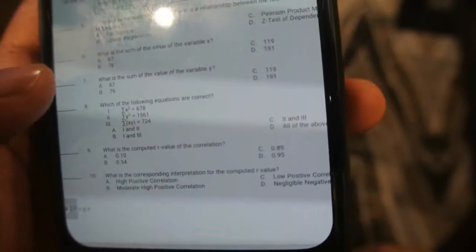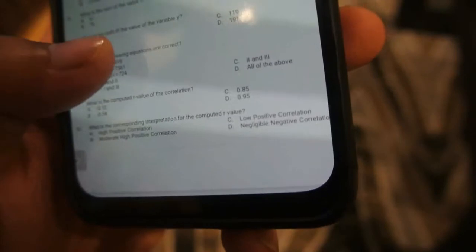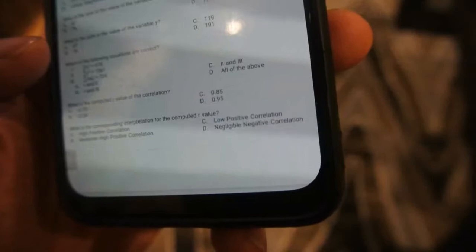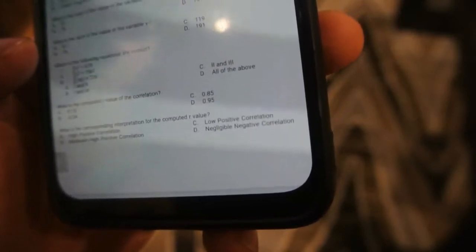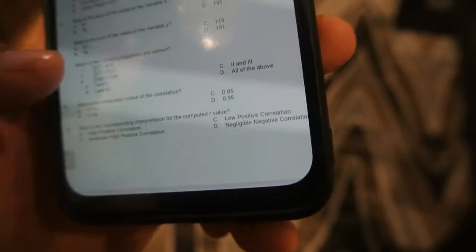Sa number 9, ano yung negative? Our value of the correlation. Ano yung sagot na na-compute mo na? Negative 0. Mali pala yung sinabi ko kanina. Yung 67 squared, mali yun. Negative correlation.